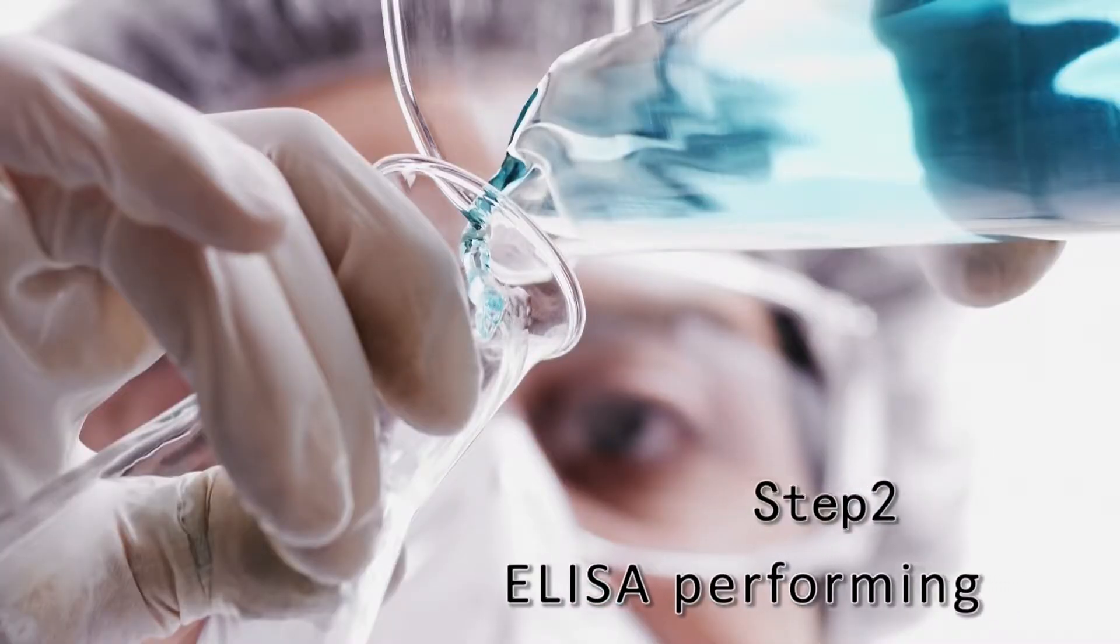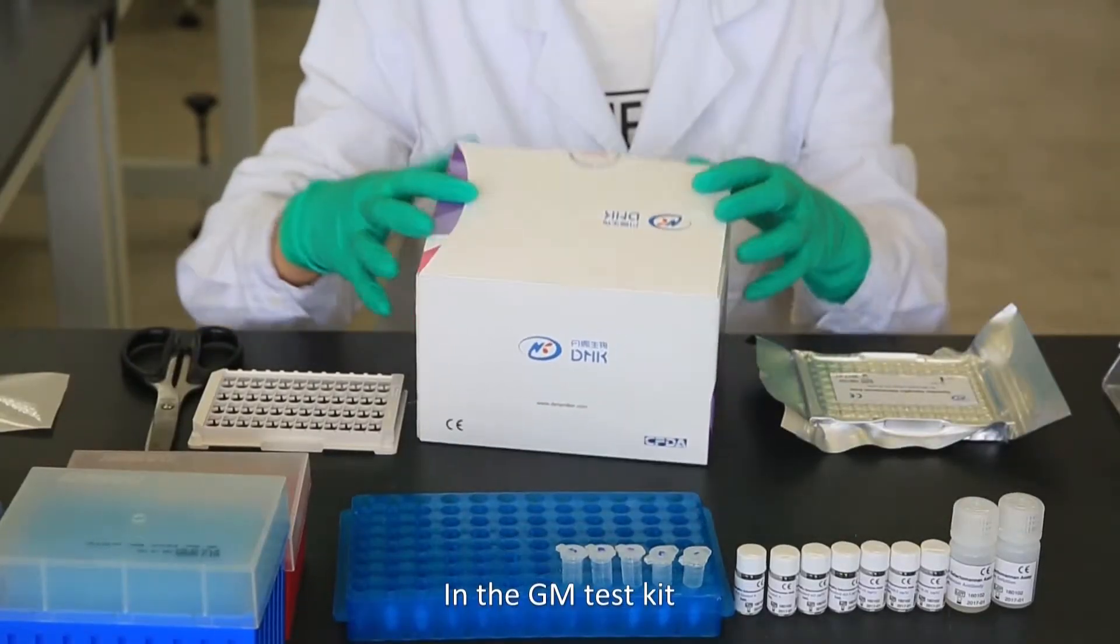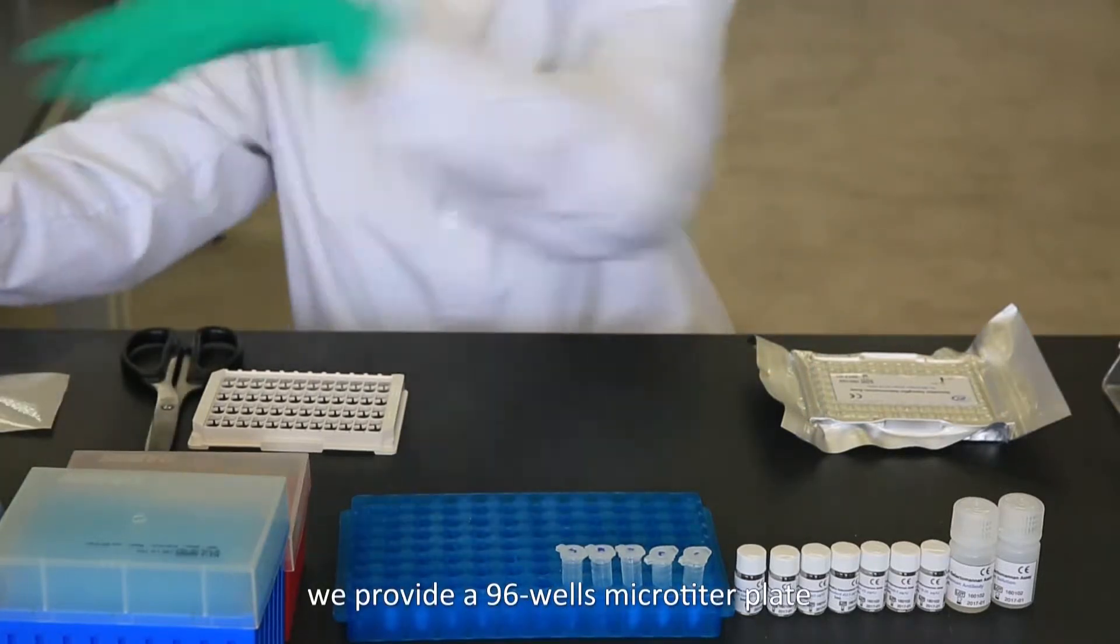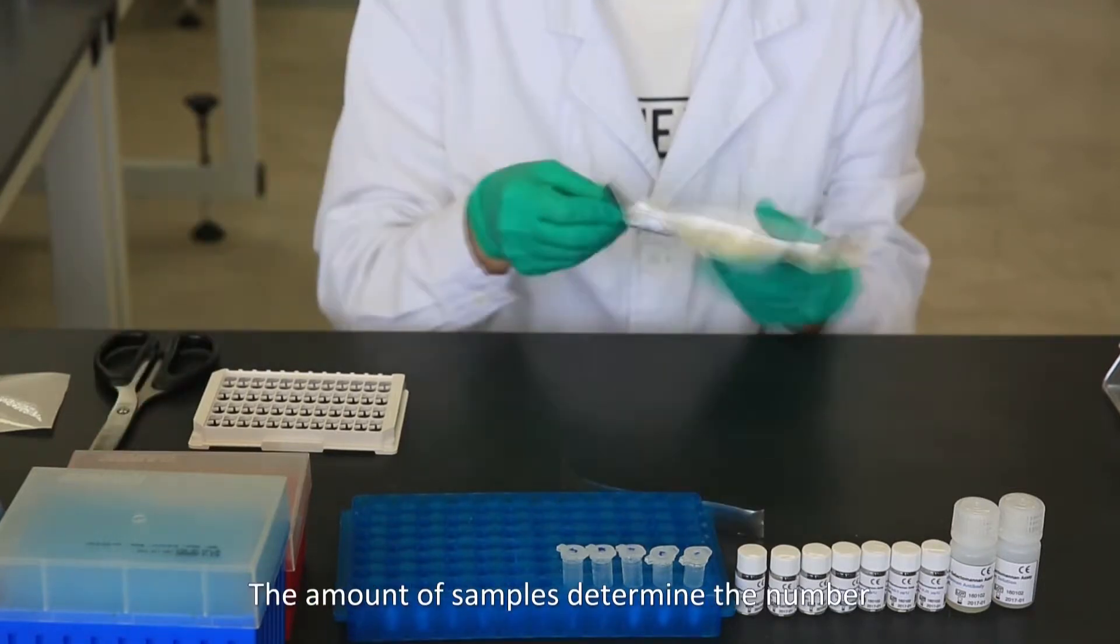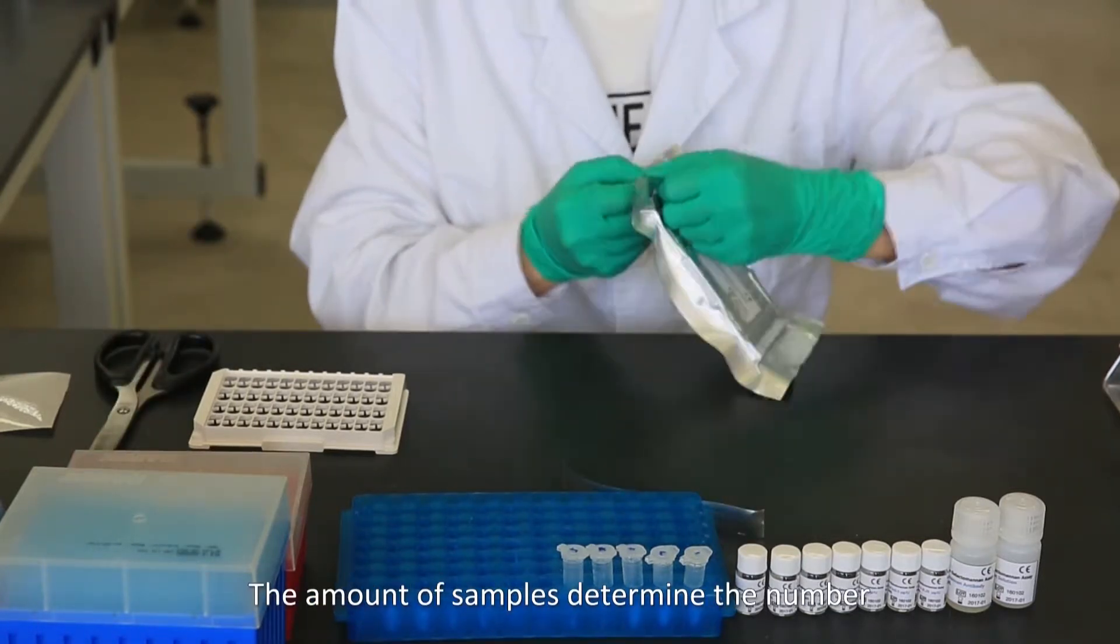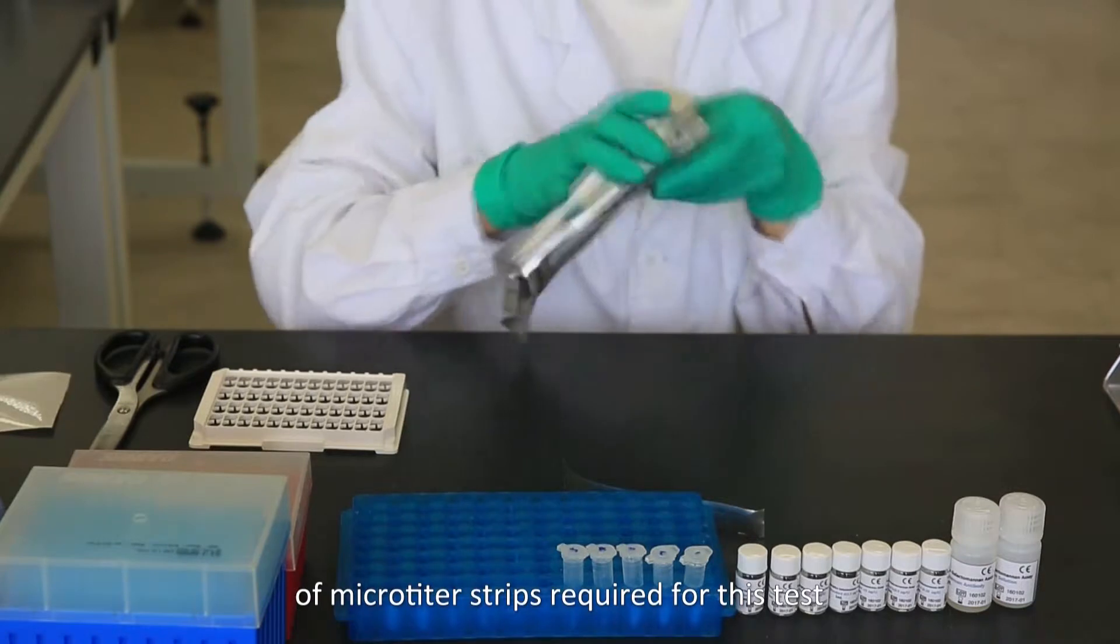ELISA performing: In the GM test kit, we provide a 96-well microtiter plate coated with antigen galactomannan. The amount of samples determine the number of microtiter strips required for this test.